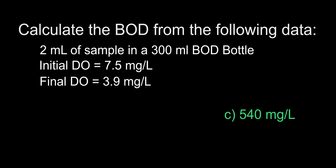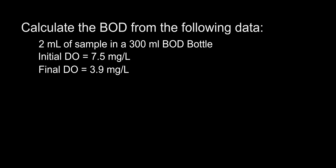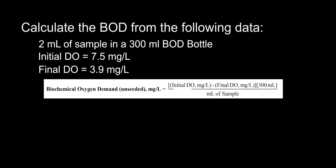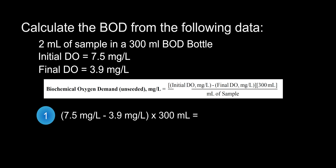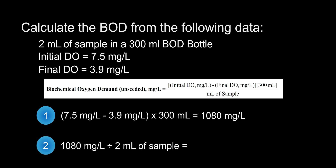The answer is C, 540 milligrams per liter. There are two different types of equations used when calculating biochemical oxygen demand, so it is important to see if they give us a seed value. This question does not give a seed value, meaning we will use the unseeded equation. For our first step, we subtract our initial dissolved oxygen value of 7.5 mg/L by our final DO value of 3.9 mg/L, then multiply by 300 mL — the size of a standard BOD bottle — giving us 1,080 mg/L. For our second part, we take 1,080 mg/L and divide it by the sample size of 2 mL, which gives us our final answer of 540 mg/L.